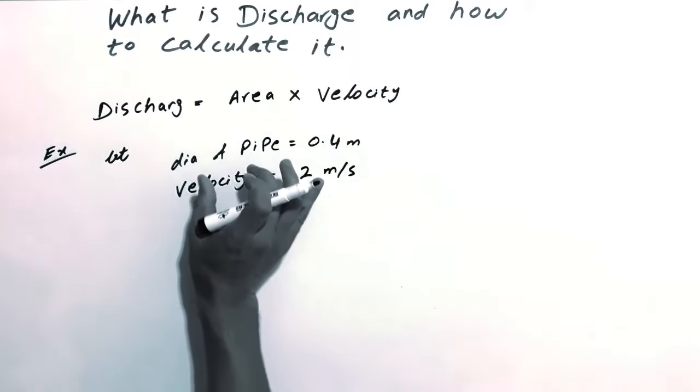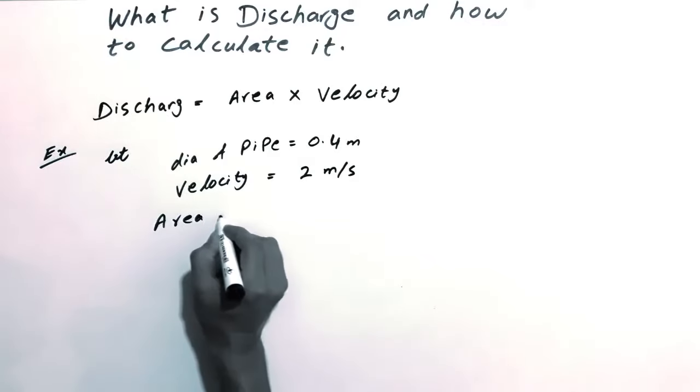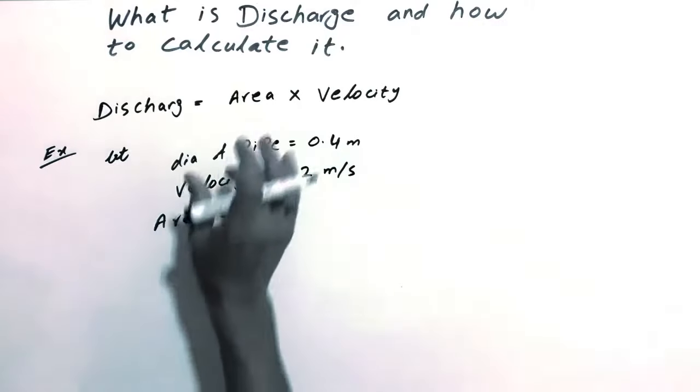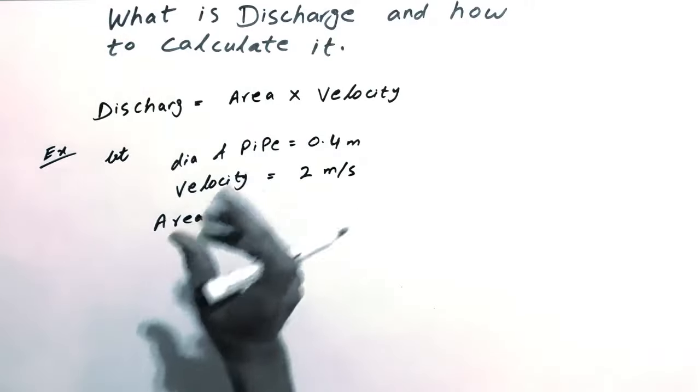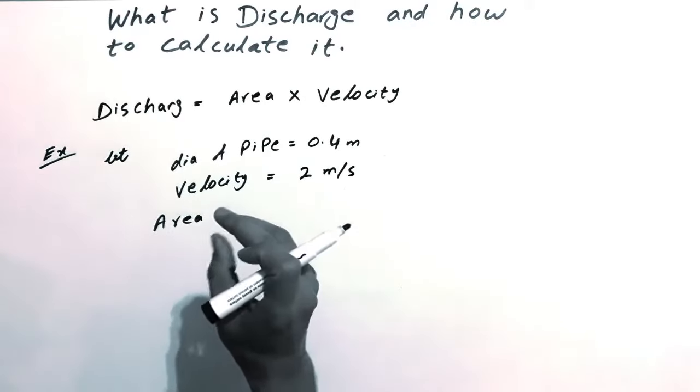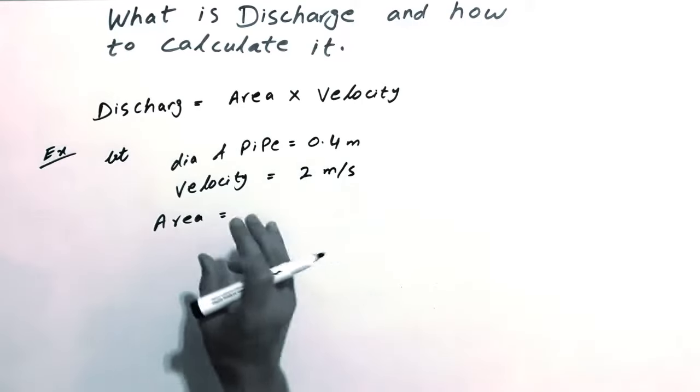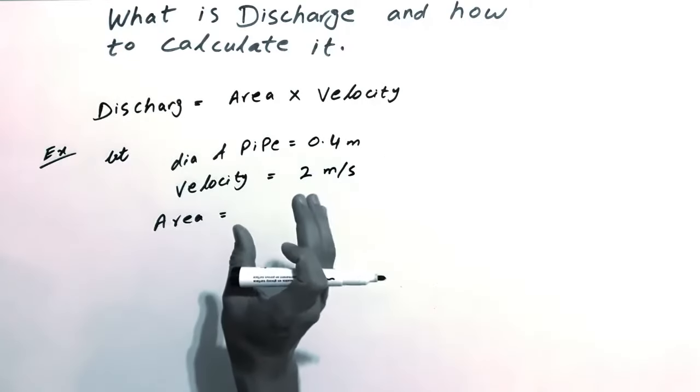Because we're given a diameter, we need to calculate the area first. You can have different sections - in our case we have a round pipe. You could have a circular, rectangular, or triangular pipe. According to that geometry, you need to calculate the area.